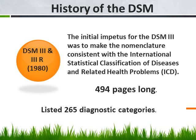In 1980 came the DSM-3 and the DSM-3R. Each book gets a little bit longer — this one was 494 pages long and listed 265 diagnostic categories. Again, the whole purpose was to try to make the terminology used in psychological diagnosis standard from one part of the country to the other.